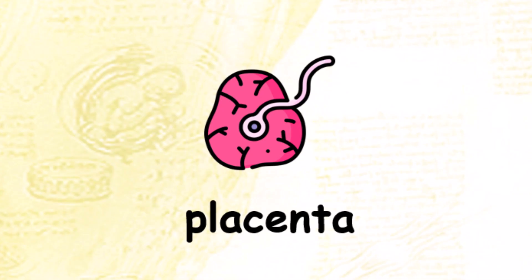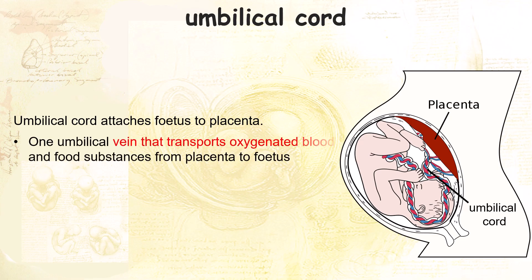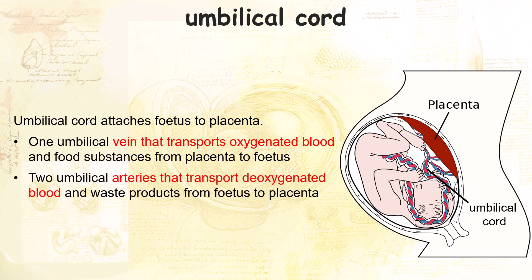Attached to the placenta is the umbilical cord. The umbilical cord connects the fetus to the placenta. It consists of one vein that transports oxygenated blood and nutrients from the placenta to the fetus, and two arteries that transport deoxygenated blood and waste away from the fetus. The contents of these vessels are similar to those in the pulmonary vein and arteries respectively, since oxygen for the fetus's heart is supplied by the placenta, similar to how the lungs supply oxygen to our heart.